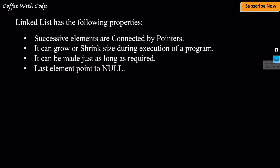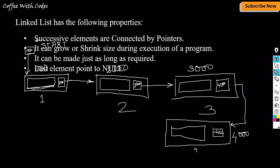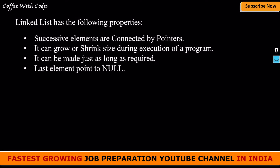As we can see in the diagram, this is the pointer of the last node and it is containing null. When a node was the last node, its pointer contained null. Now when a new node is added, the previous last node contains the new node's address, and the new last node contains null. The final property says: it does not waste memory space. As per our requirement, we can increase or decrease the number of nodes, so no memory is wasted.